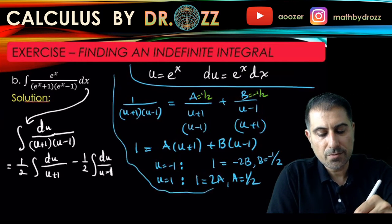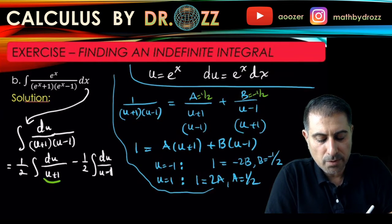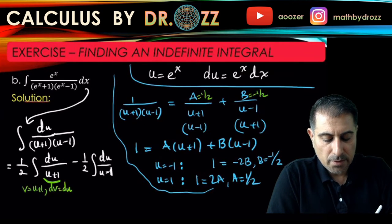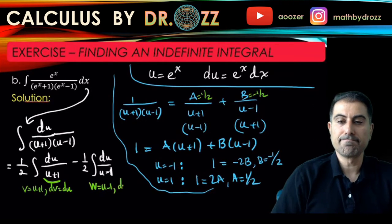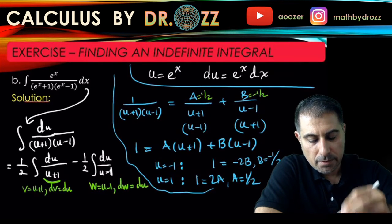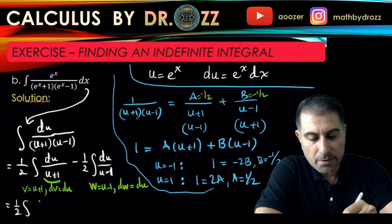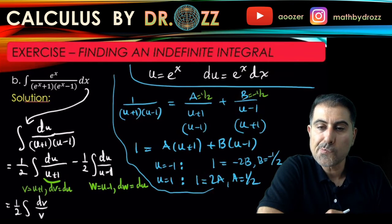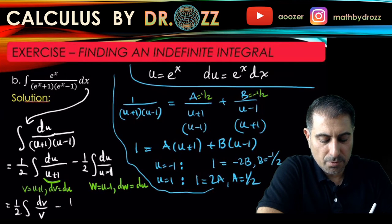So I'm going to use two substitutions here. One is v equals u+1, so that dv equals du, and the other one is w equals u-1, so that dw equals du. And it turns out that this integral is 1/2 dv over v and then the other one is dw over w.